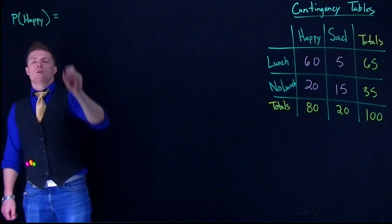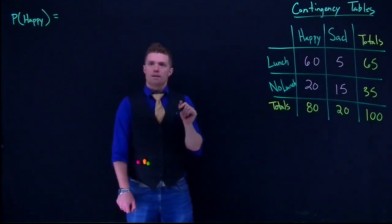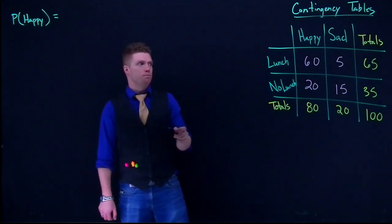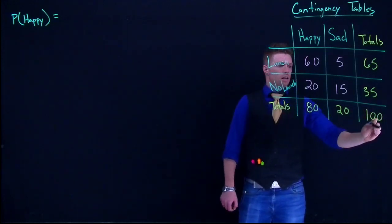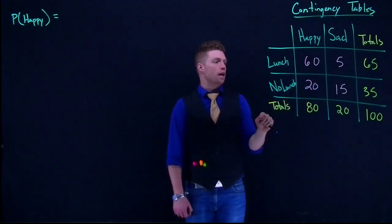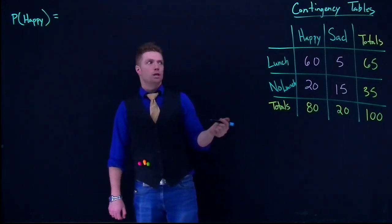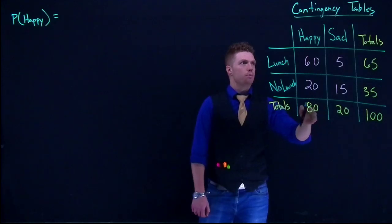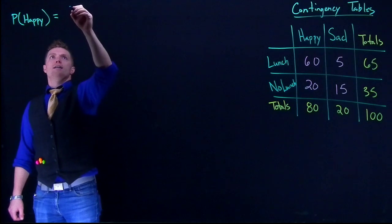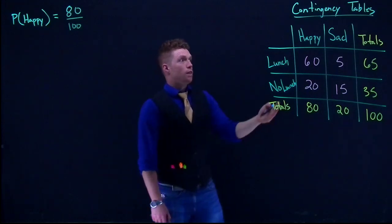Remember from the fundamental rules of probability that the probability of a specific event is the total number of outcomes for the event we're interested in divided by our sample space. Here our sample space is 100. Of those 100 possible outcomes, we ask: what percentage are happy? There were a total of 80 people who identified as being happy, so we write 80 divided by 100. That's a simple probability.